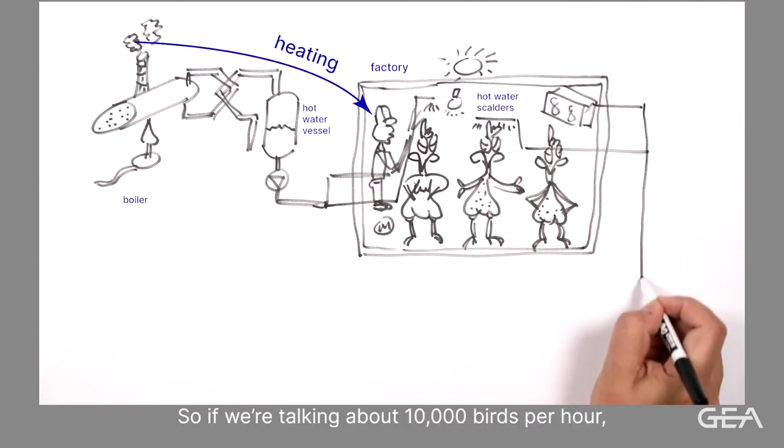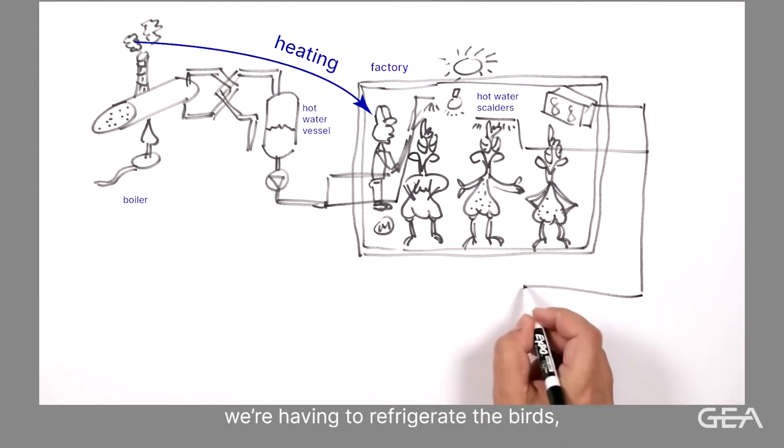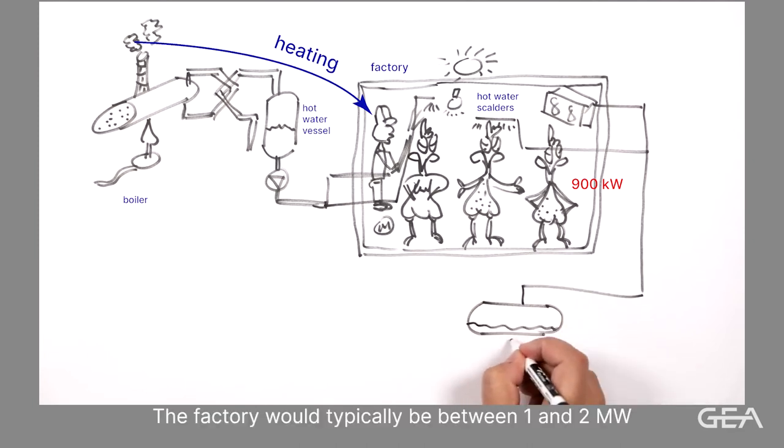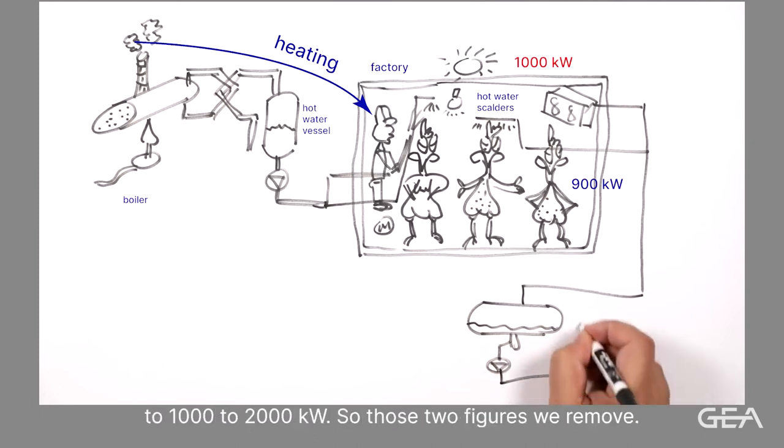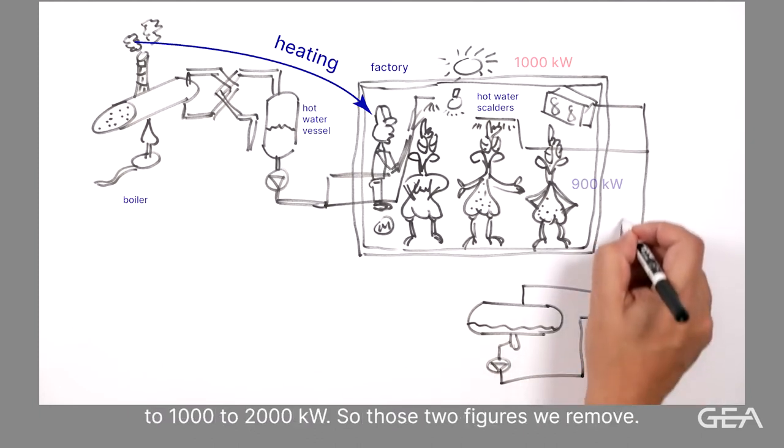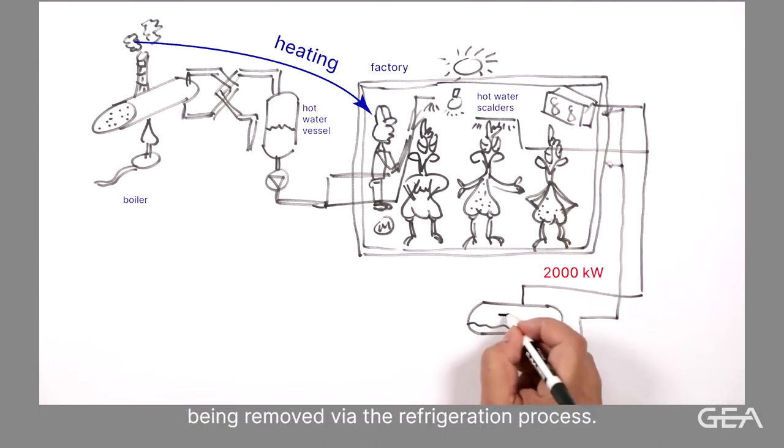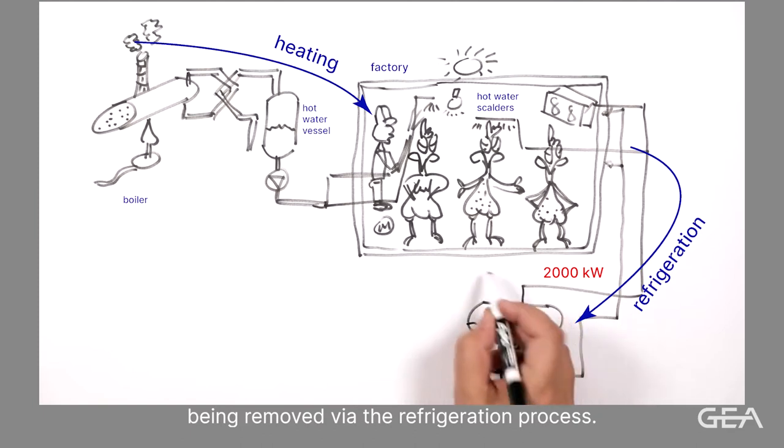So if we're talking about 10,000 birds per hour, we're having to refrigerate the birds. That's about 900 kilowatts worth of heat we have to remove. And the factory would typically be between 1 and 2 megawatts, 1,000 to 2,000 kilowatts. So now we have around about 2,000 kilowatts being removed via the refrigeration process.